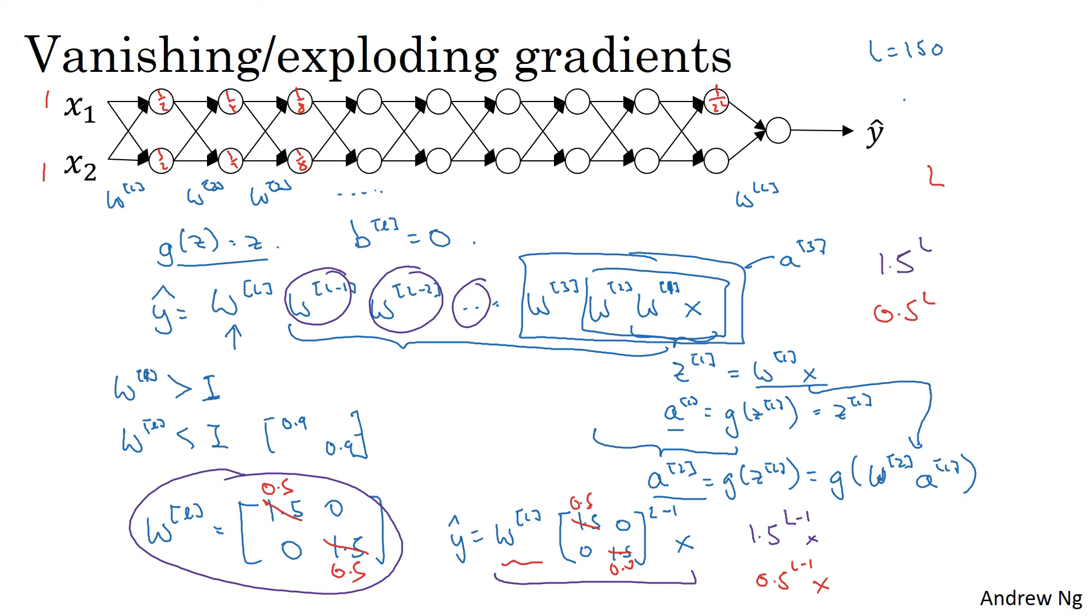But with such deep neural networks, if your activations, your gradients, increase or decrease exponentially as a function of L, then these values could get really big or really small. And this makes training difficult. Especially if your gradients are exponentially small in L, then gradient descent will take tiny little steps and it'll take a long time for gradient descent to learn anything.